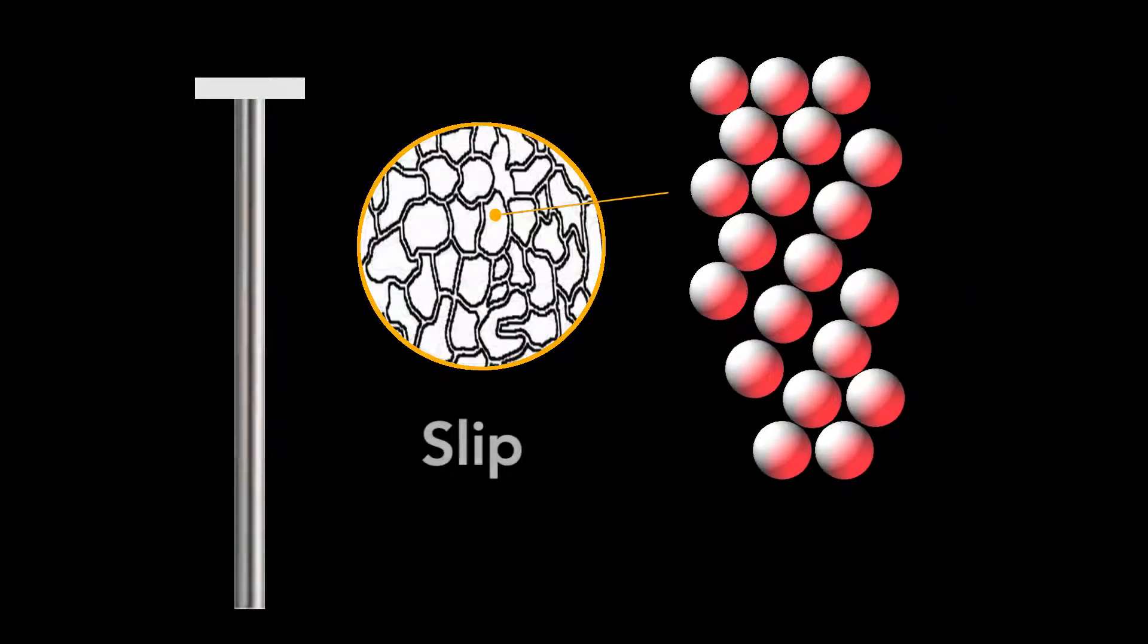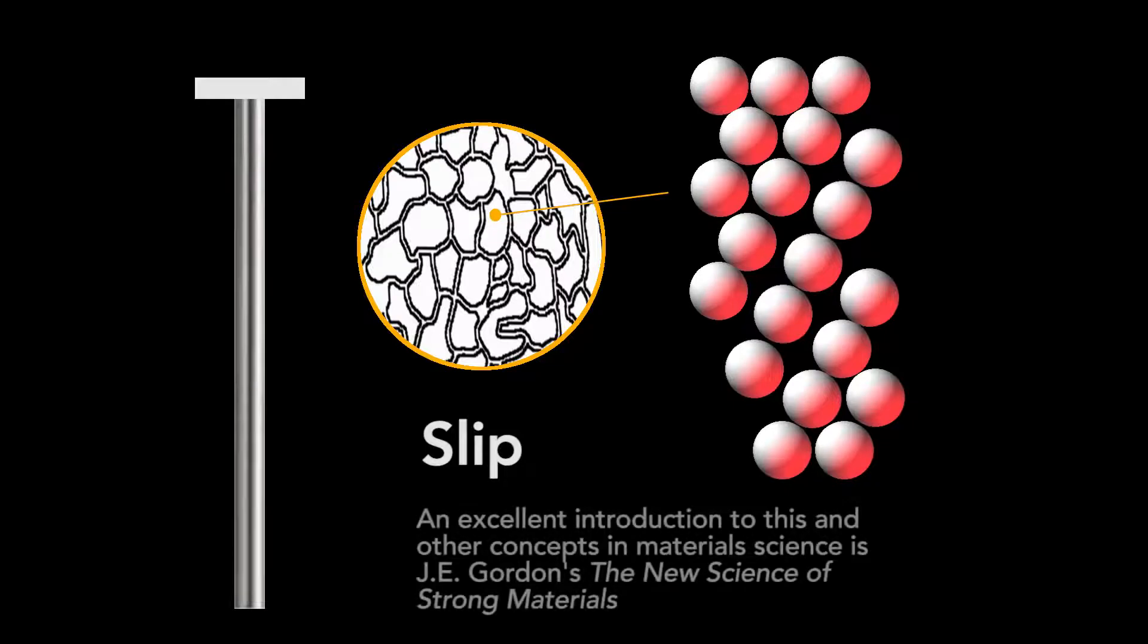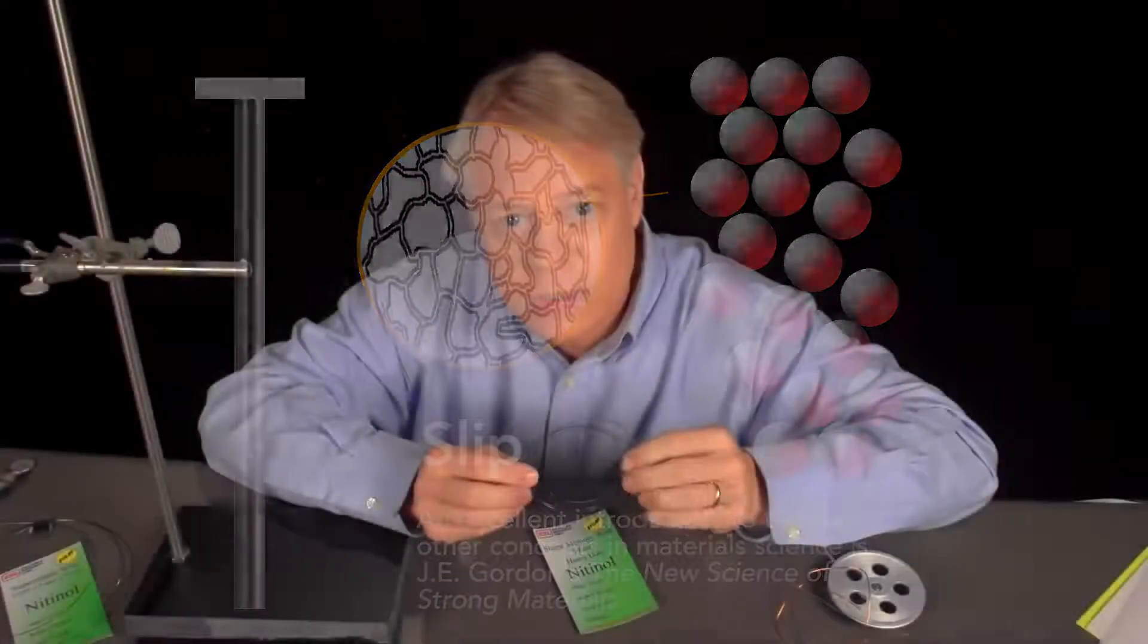Although it's a bit more complicated than applied here, which looks like spherical atoms rolling along each other. It involves defects in the crystal that allow the atoms to move only small amounts.